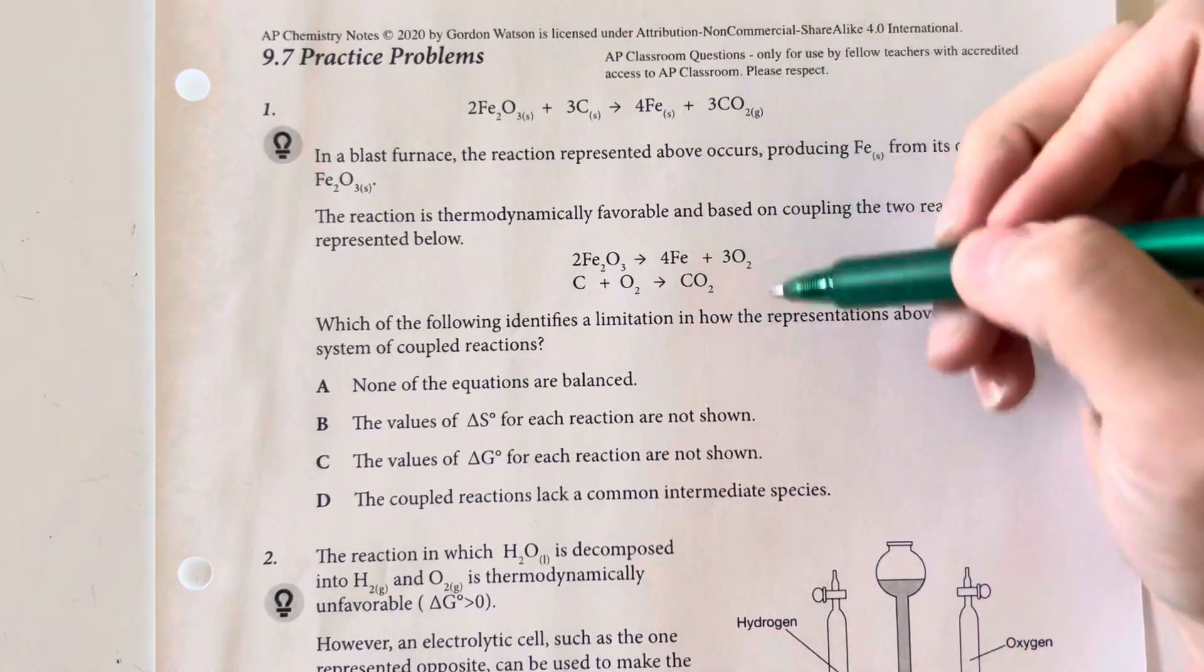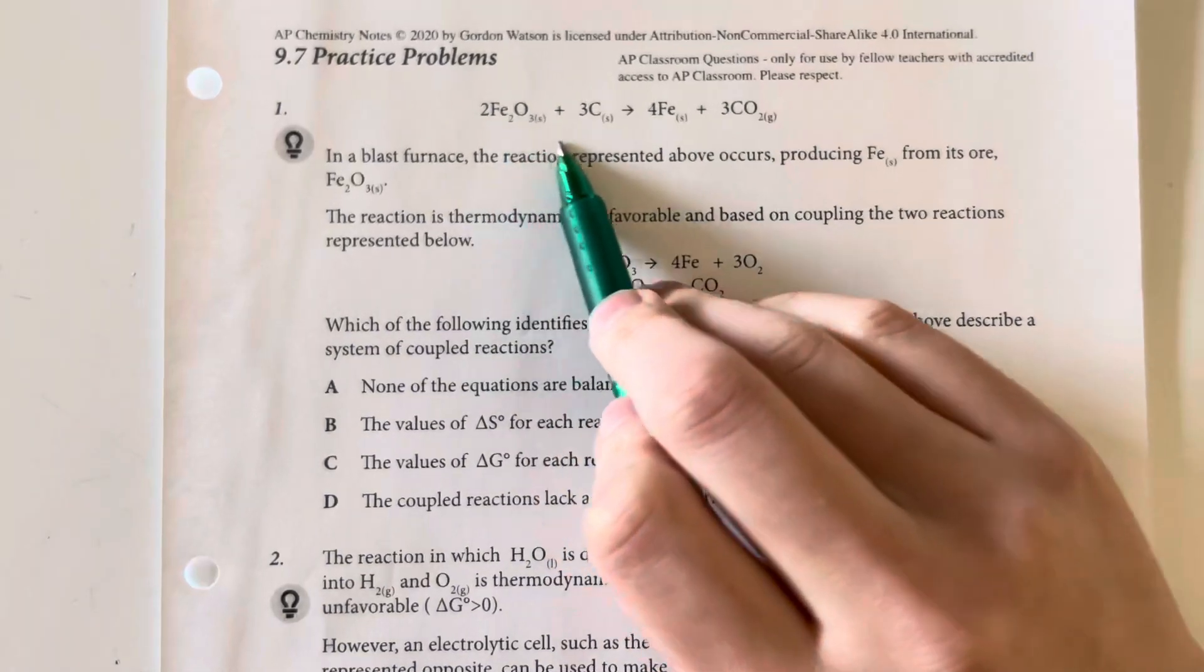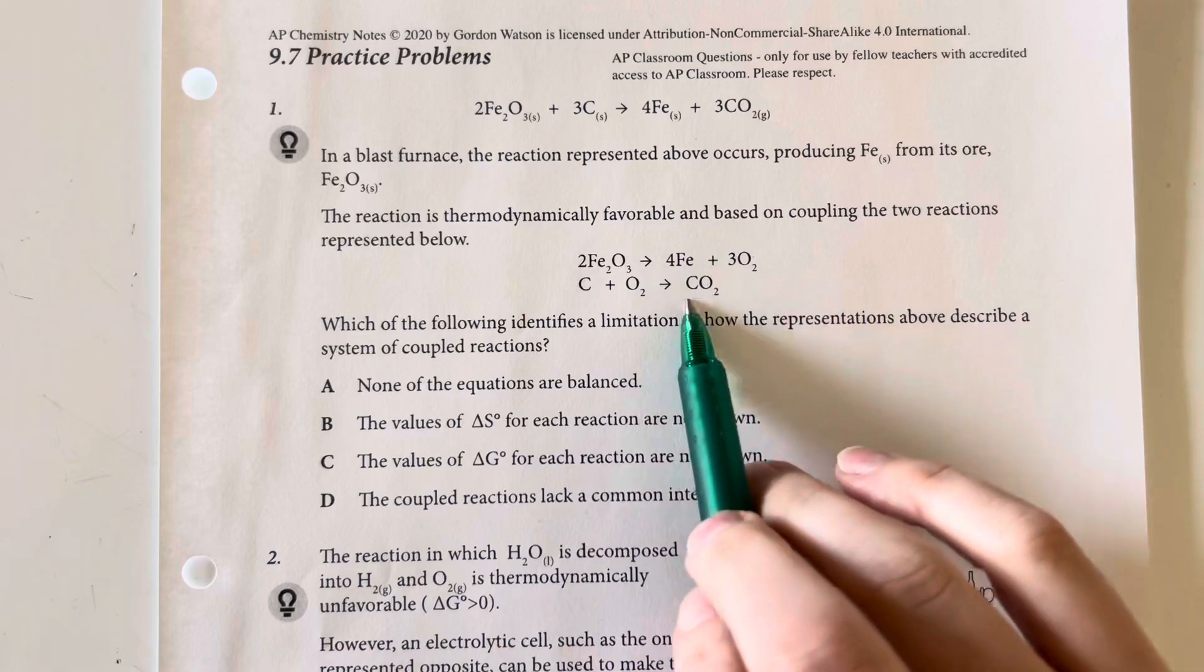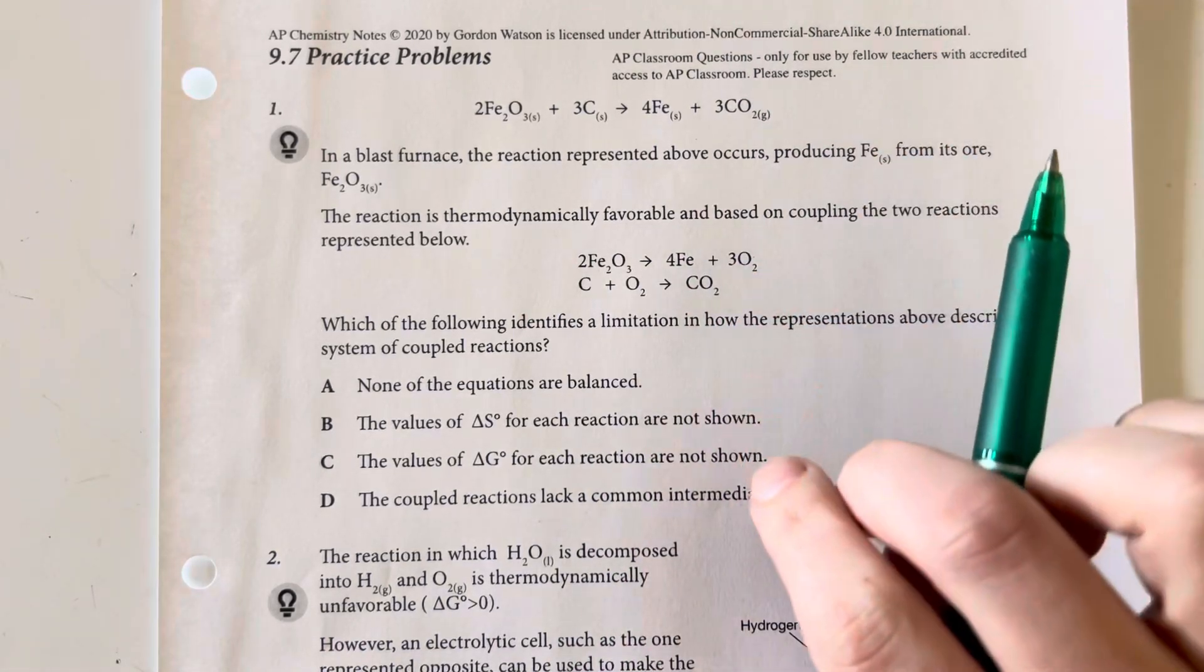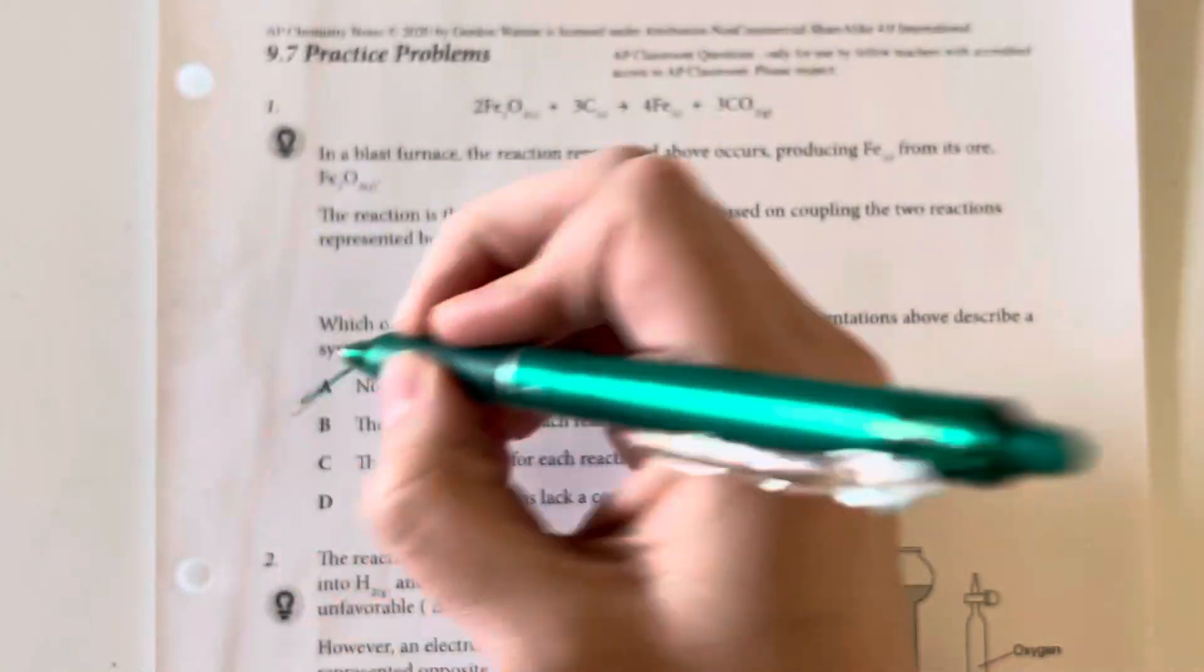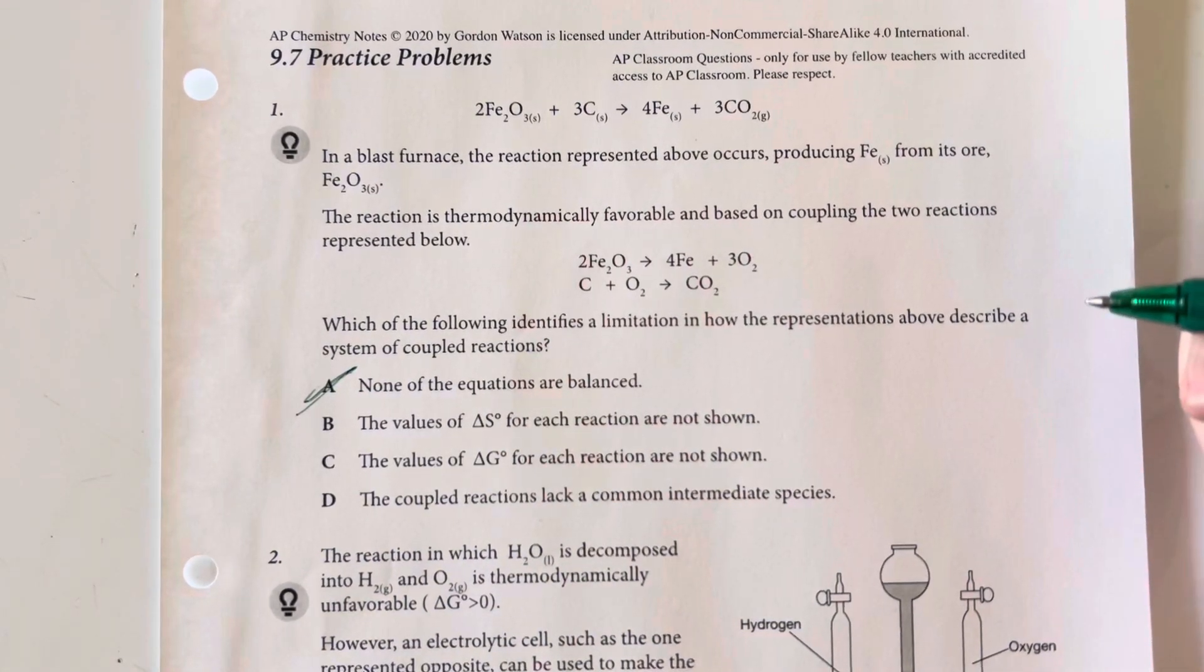So when we look at these systems of coupled reactions, we can see that it is correctly balanced here, and we can see the two separate reactions present. So option choice A is not going to be our best answer choice, since the equations are in fact balanced.